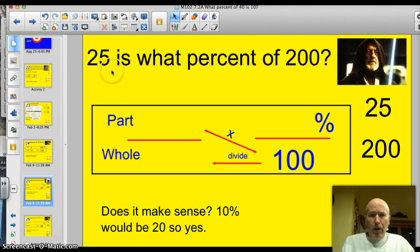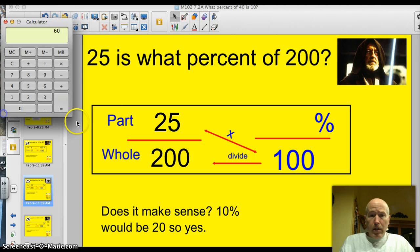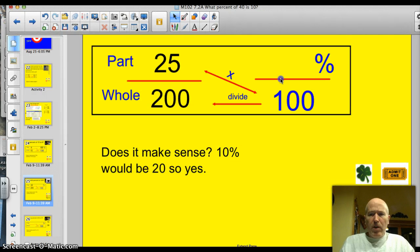What is the part? 25. 25 is the part. So I'll put the part in here. And then we're trying to find the percent of 200. Well, 200 is the whole. So I've got 25 over 200. I'm going to multiply 25 times 100. 25 times 100, 2,500. We'll divide that by 200 equals 12.5. Let's just see. Would this make sense? 12 and a half percent.